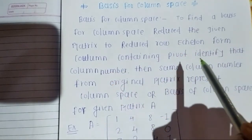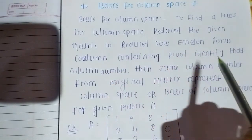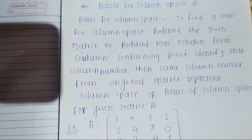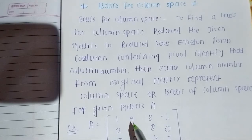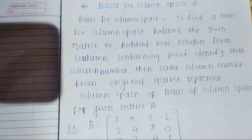After reducing the matrix to Reduced Row Echelon Form — what does RREF mean? The first diagonal element has zeros below it, the second diagonal has zeros below and above it, and the third diagonal also has zeros below and above it.